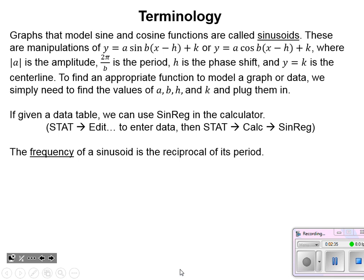As a reminder, nothing has changed here. The absolute value of a is the amplitude of the graph. Two pi divided by b — since we're dealing with sine and cosine — is the period of the graph. h is the phase shift; since b has been factored out, we can simply look at the parentheses and see the phase shift left or right immediately. And y equals k is the center line of the function.